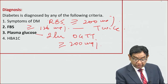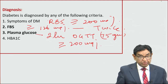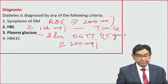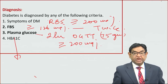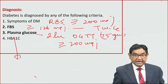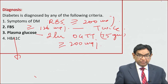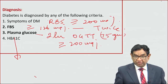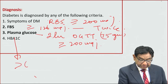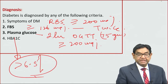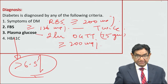Plasma glucose after two hours of oral glucose tolerance test — if this is more than 200 mg%, this is diabetes. In the oral glucose tolerance test we use a standard 75 grams of glucose. Recently, HbA1c has been added: if the value is more than 6.5%, this is a diagnostic criterion of diabetes.